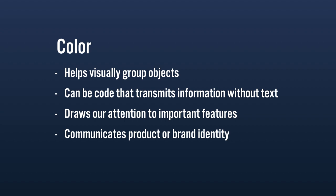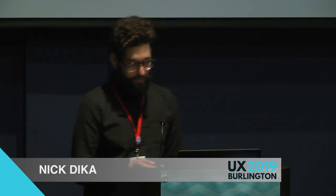With the Gestalt principles we've touched on color, but color deserves more detail. Color can visually group objects, serve as a code that transmits information without text, draw user attention to important features, and communicate product or brand identity. That last point can be frustrating for UI designers since we don't always have full freedom — if Starbucks hires me to design their mobile app, it's probably going to be green. But when we do have freedom with color, we can do some interesting things — though color coding definitely has limitations.